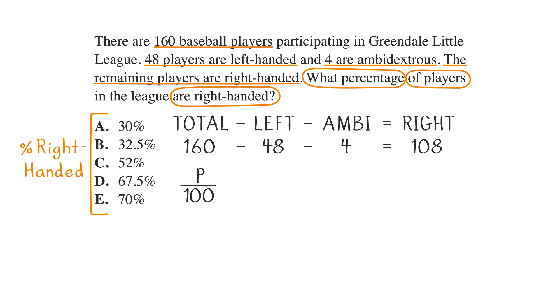Next, the question says of players. Of means multiply. Of players means multiply the players, which is 160. So, we can write P over 100 times 160.